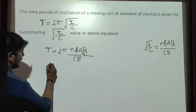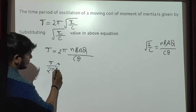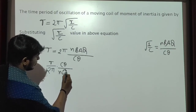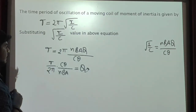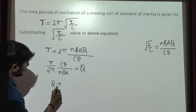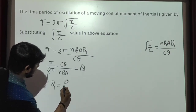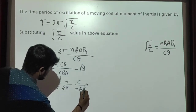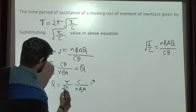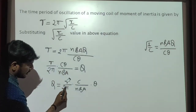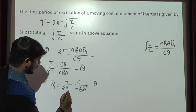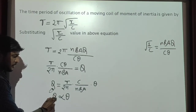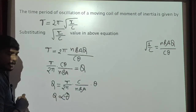Rearranging the terms: T divided by 2 pi, into C theta divided by N B A, equals Q. So Q equals T divided by 2 pi, into C divided by NBA, into theta. Here, T divided by 2 pi into C divided by NBA is a constant. Therefore Q is proportional to theta — the total charge is proportional to the deflection theta.